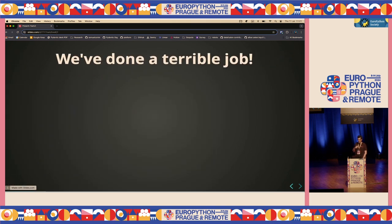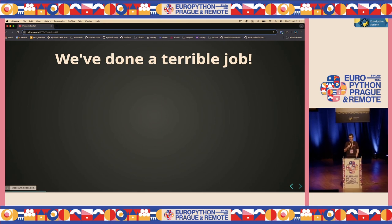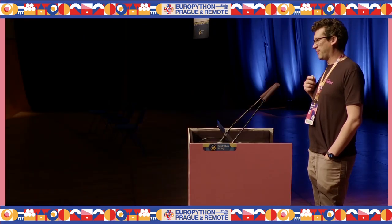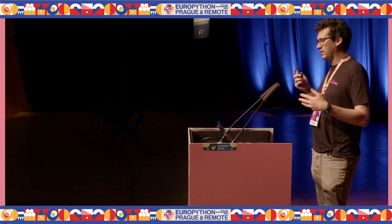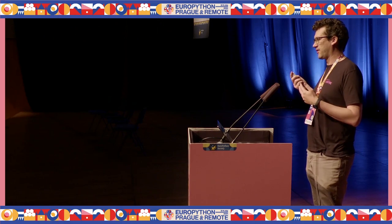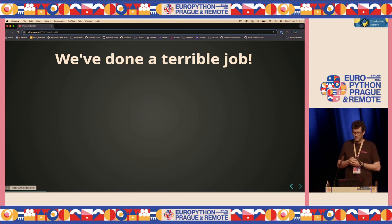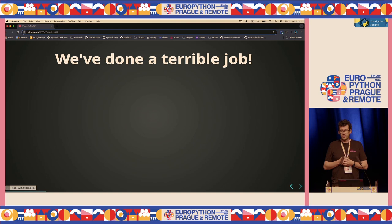I want to start with what I think is a controversial point of view, which is that we've done a terrible job as software developers of providing a good way of building web applications. What we want to do is to deduplicate, to avoid people having to repeat work that someone else has already done. And in many places, we've done a really good job of that in Python. But when it comes to building common bits of web applications, we do a terrible job.